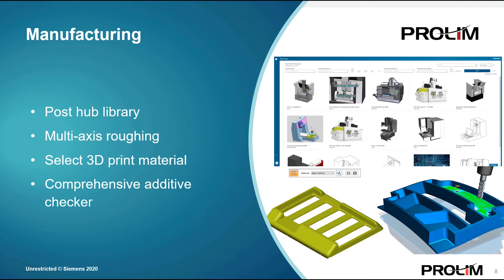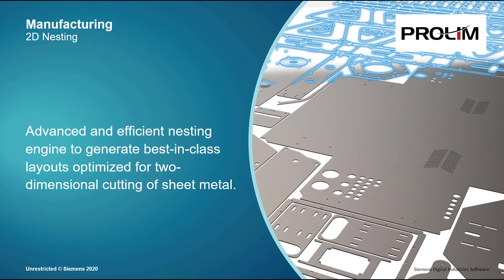We also had a sneak peek of the multi-axis roughing — it's truly state-of-the-art. We've also been adding things in additive, providing better material selections for your printing needs and bringing various additive checkers into one comprehensive additive checker to make things a whole lot easier. Another part of the manufacturing module is 2D part nesting. A lot of you out there are using sheet metal, and it's the ability to lay those sheet metal parts out in the most efficient way possible. We have the most efficient algorithm in the industry for doing just that.